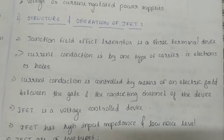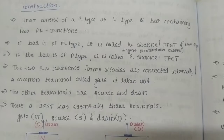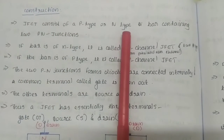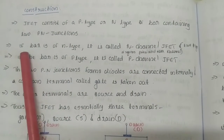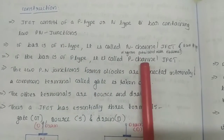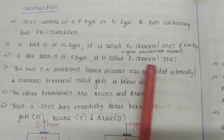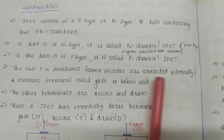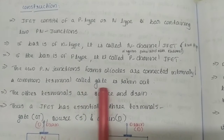The characteristics of the JFET: for an N-type silicon bar containing two PN junctions, if the bar is of N-type, it is called N-channel JFET. If the bar is of P-type, it is called P-channel JFET. The two PN junctions form diodes connected internally, and a common terminal called the gate is taken out.